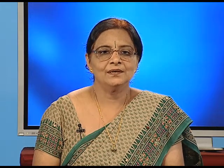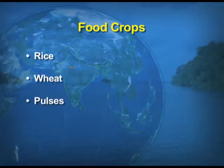The first category of crops we will take up today is food crops. Food crops are those which we basically use as the main food in our daily diet. A few examples are rice, wheat, pulses, and coarse grains.